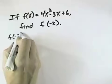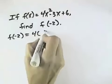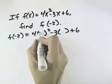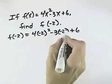The find f of negative 2 means we leave our function alone except for the x values. We take each of the x values out, there's two of those, because we're going to replace those with negative 2. So we replace each x with a negative 2.